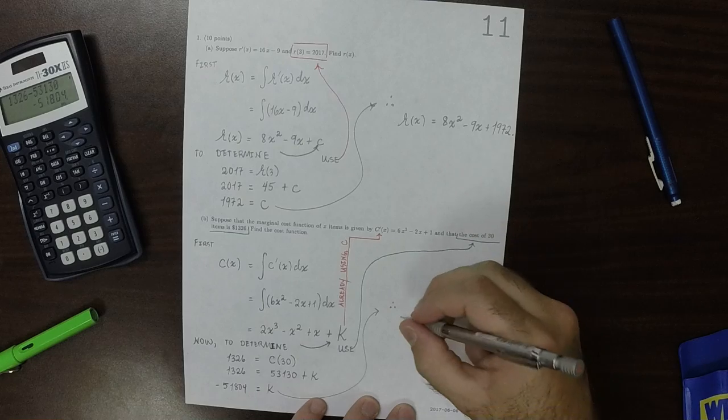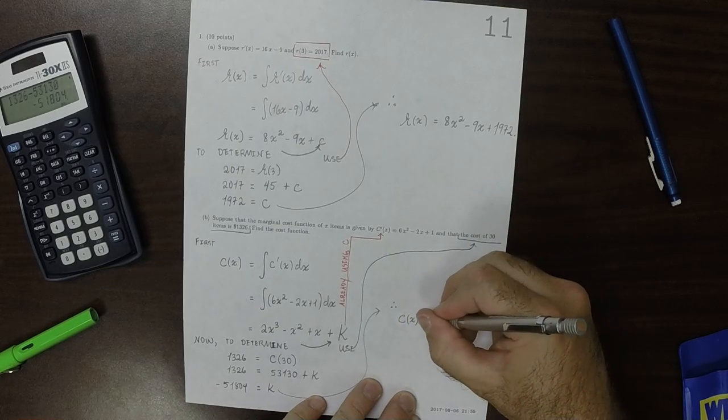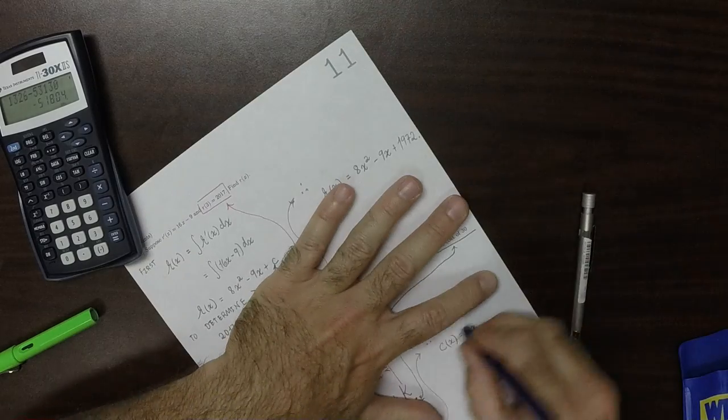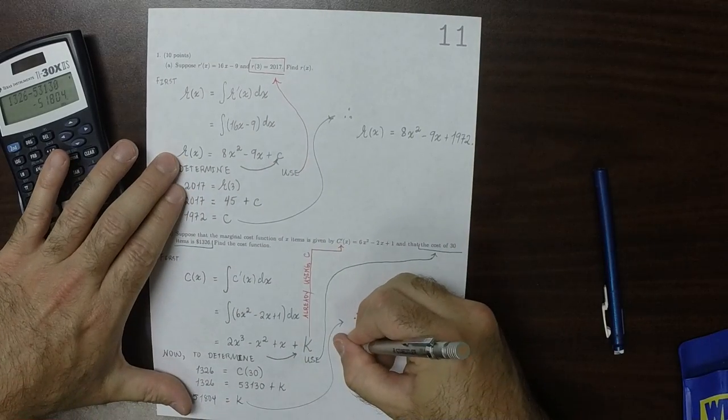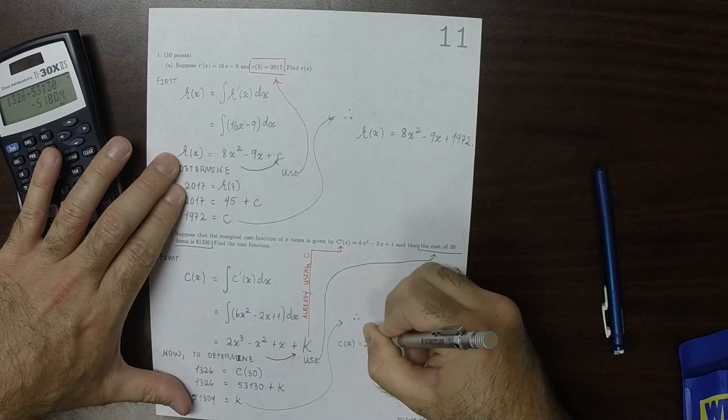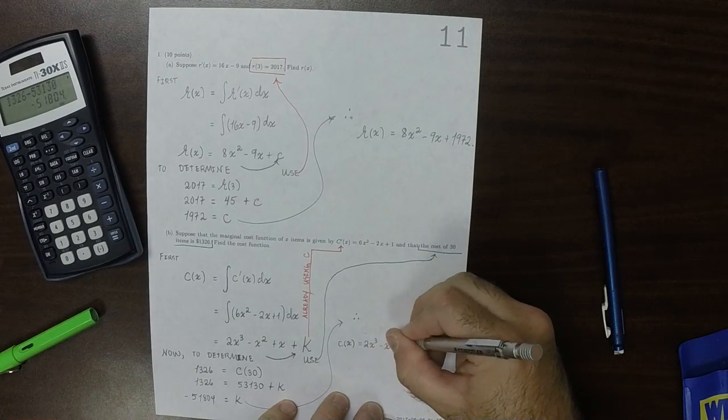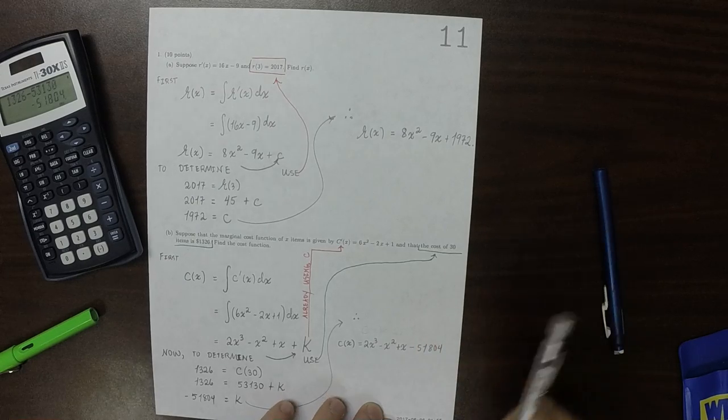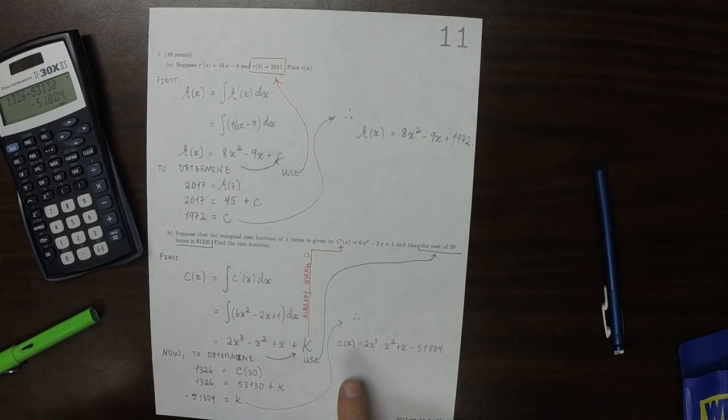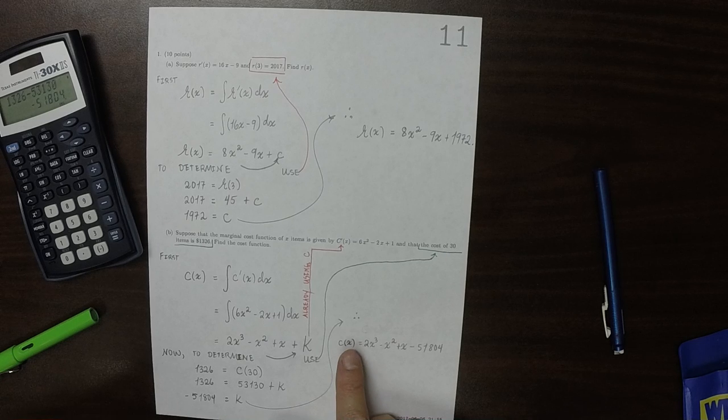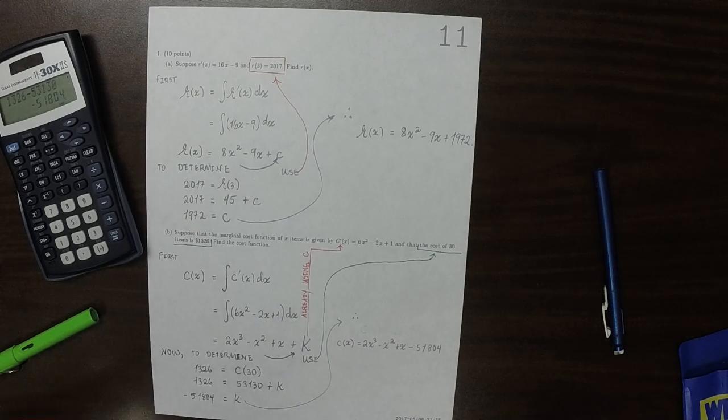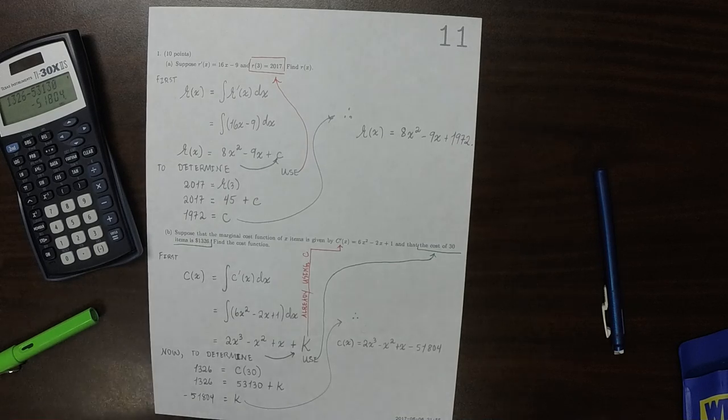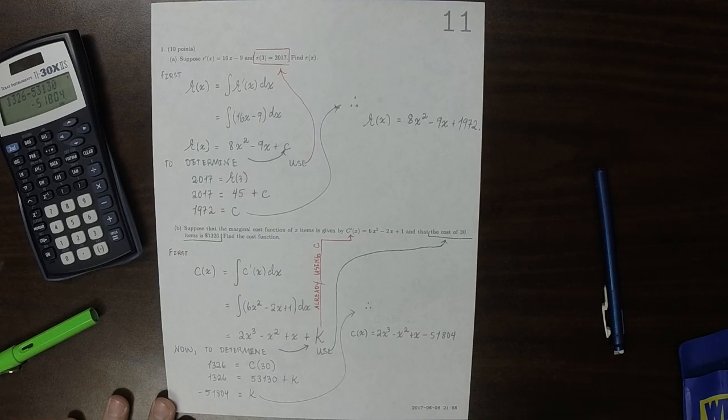And as a result, the cost function is 2x cubed minus x squared plus x and then minus 51804. So that's an interesting cost function because notice that when you plug in 0, the cost is negative, which means that if you don't make any items, you still make money, which means, I suppose, that this cost function is somehow being forced by government to make money. Okay.